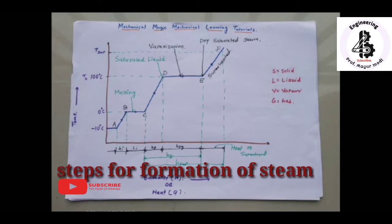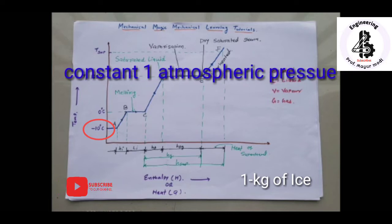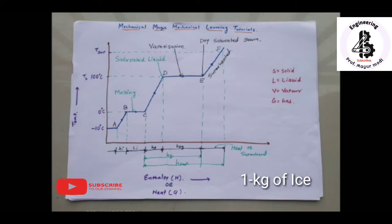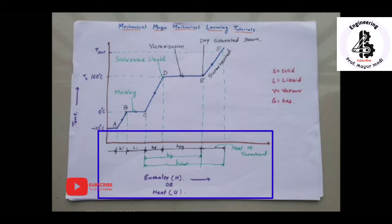To consider the phase changes of water, we consider 1 kg of ice at temperature T1, at minus 10 degree centigrade and one atmospheric pressure, that is 1.0133 bar. This ice is kept in a frictionless and weightless piston-cylinder arrangement. The ice in the cylinder is heated at a uniform rate at constant atmospheric pressure, where heat supply q equals enthalpy h.